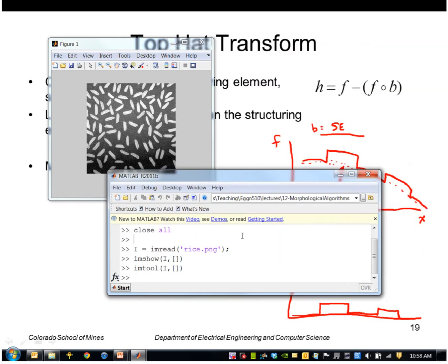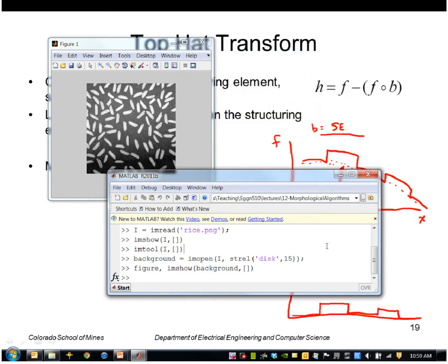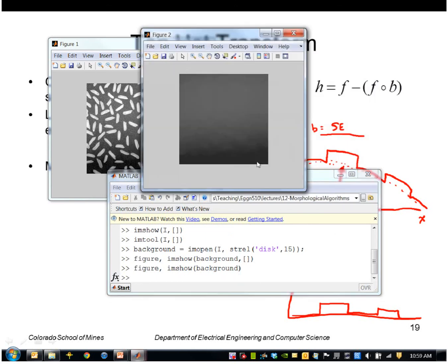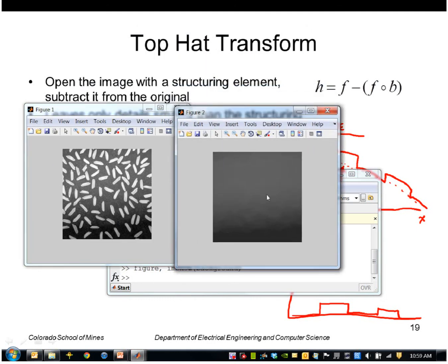Okay so I've found that the rice grains are bigger than a disk of radius 15. So I will open the image with a structuring element that's a disk of radius 15. And that gives me the background, actually let me display it without the empty brackets here. So anyway you can see I've captured the background here.